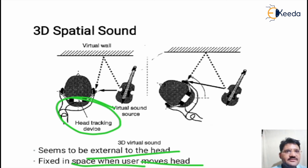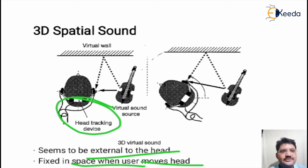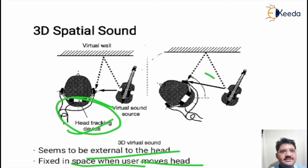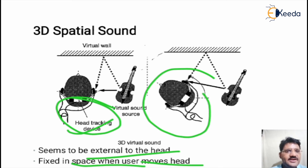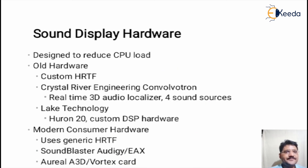When the user wears 3D sound devices, a fixed head tracking device is used, so the device remains fixed while the user moves in any direction.